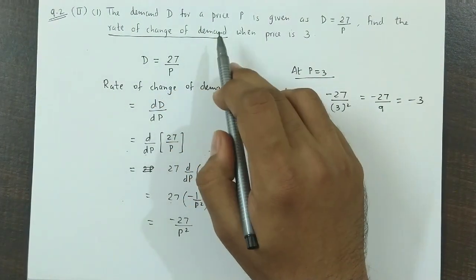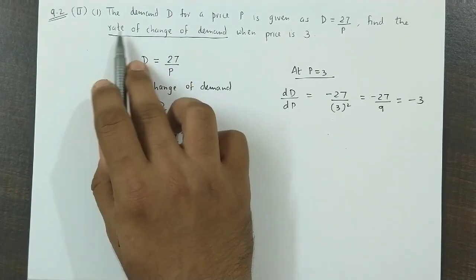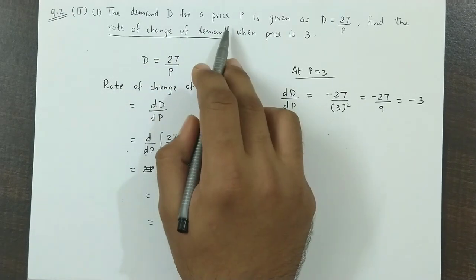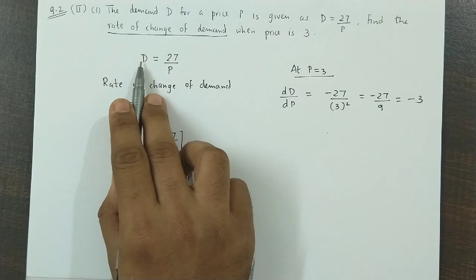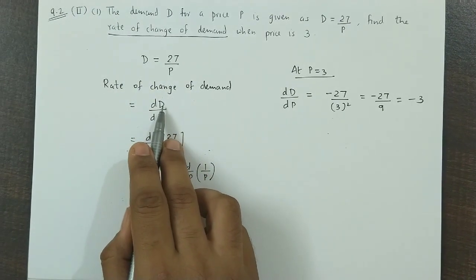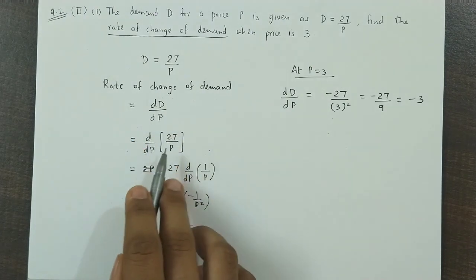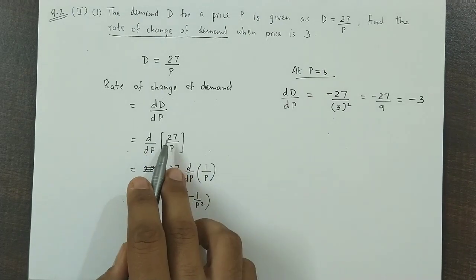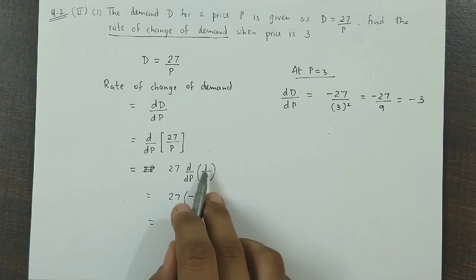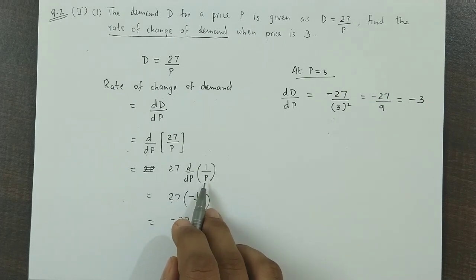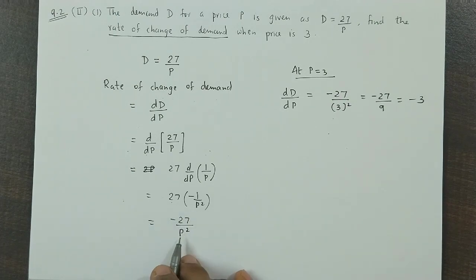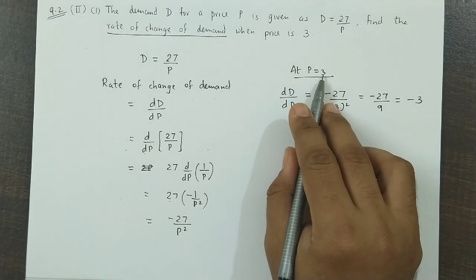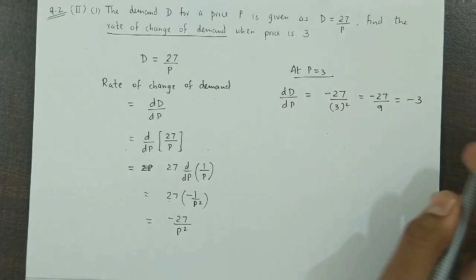So, remember, when the phrase rate of change of appears, that indicates we need to find the derivative of that function. So, we need to find the derivative of demand, and demand is expressed in terms of price. So, you have to find the derivative of demand with respect to price. The demand function is 27 by P. 27 is a constant, so we take it out as a coefficient. Then, the derivative of 1 by P, using the formula for 1 by X, is minus 1 by P square. So, the derivative value comes to minus 27 upon P square. And then, putting the value of P as 3, we get the rate of change of demand as minus 3.